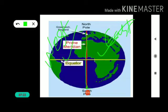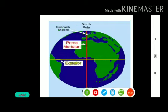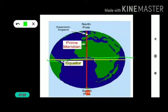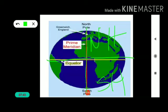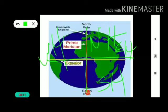The equator and the prime meridian divide the Earth into four equal parts. The yellow line here is the equator line. This equator line divides the Earth into two equal parts — that is the northern hemisphere and the southern hemisphere. Then the prime meridian divides the Earth into two equal parts — that is the eastern hemisphere and the western hemisphere. So together they divide the Earth into four equal parts.